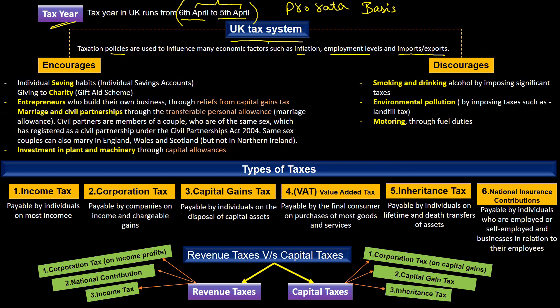The UK taxation system encourages few habits such as saving habits of individuals, giving charity, and by giving relief in the form of gift aid scheme. In the case of entrepreneurs, for example those who want to start new businesses, the relief can be given in the form of capital gains tax. The UK taxation system also encourages marriage and civil partnership, and it is encouraged by giving relief in the shape of transferable personal allowance to the other partner.